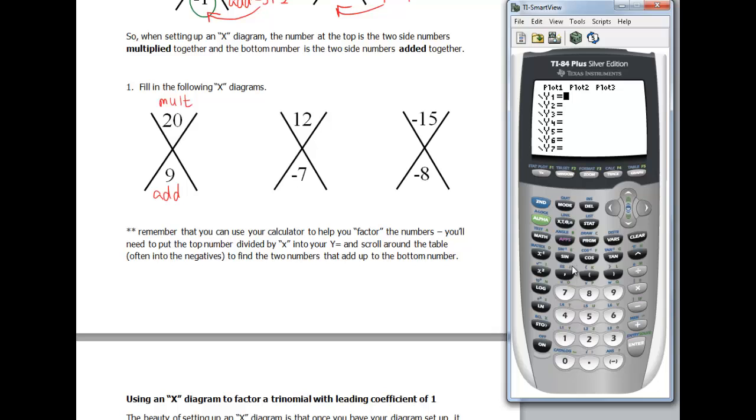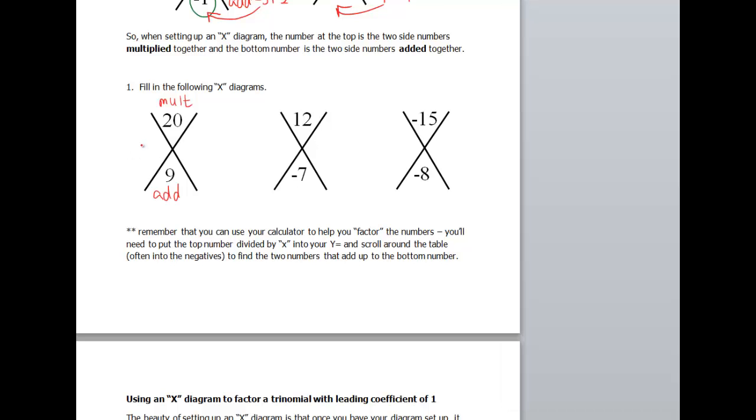And in my y equals, I'm going to put 20 divided by x. And we're going to take a look at our table. So second table. And when that comes up, I'm going to need to scroll down, because I need these numbers to add to positive 9. So I think a 4 and a 5 will work. So over here, I'm going to put a 4 and a 5. You can do 5 or 4, 4 and 5 doesn't really matter.